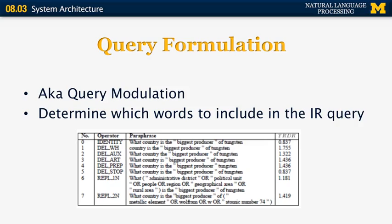'Biggest producer' can also be replaced by 'largest producer.' 'Country' can be replaced by 'region,' 'geographical area,' 'rural area,' and so on. What's very important is that depending on the target search engine, it may be important to use the right connective — for example, the word 'or' to indicate a disjunction of query words, or perhaps a vertical bar for the same purpose, and the use of double quotes to indicate phrases.